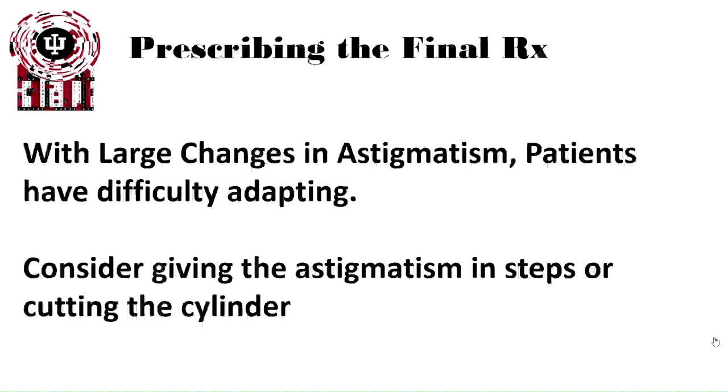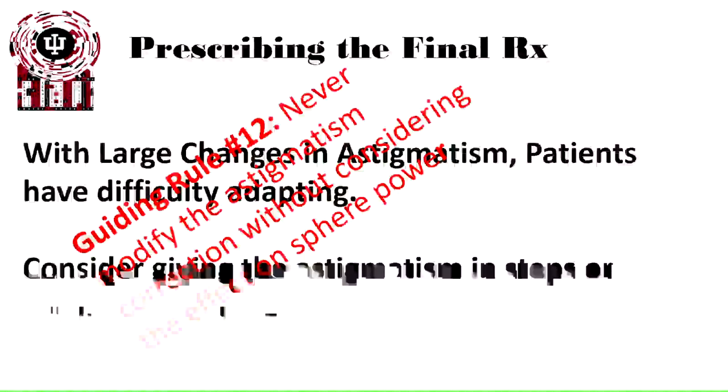We also will change the spherical equivalent depending upon the final prescribing Rx. Especially when large changes in astigmatism, patients have difficulty adapting. Consider giving astigmatism in steps or cutting the cylinder. Guiding rule number 12: never modify the astigmatism correction without considering the effect on the sphere power.